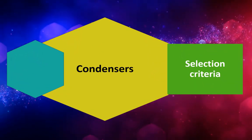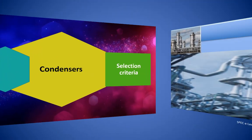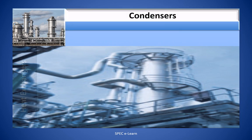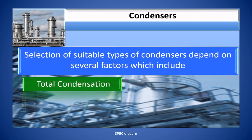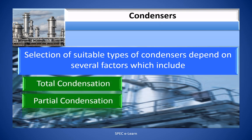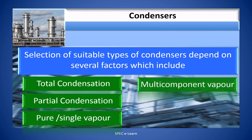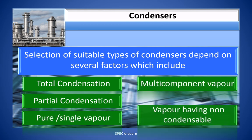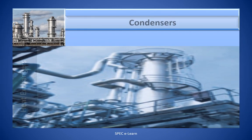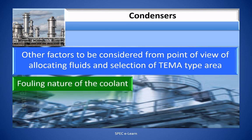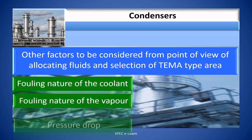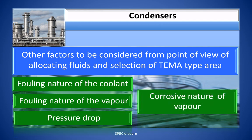Selection of suitable types of condensers depends on several factors, including: total condensation or partial condensation, pure or single-component vapor, multicomponent vapor, and vapor containing non-condensables. Other factors from the point of view of fluid allocation and heat exchanger type selection include fouling nature of the coolant, fouling nature of the vapor, pressure drop, and corrosion nature of the vapor.